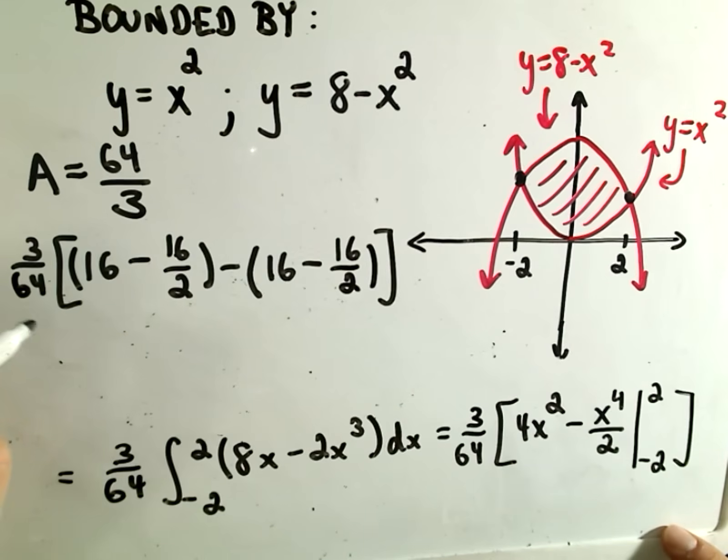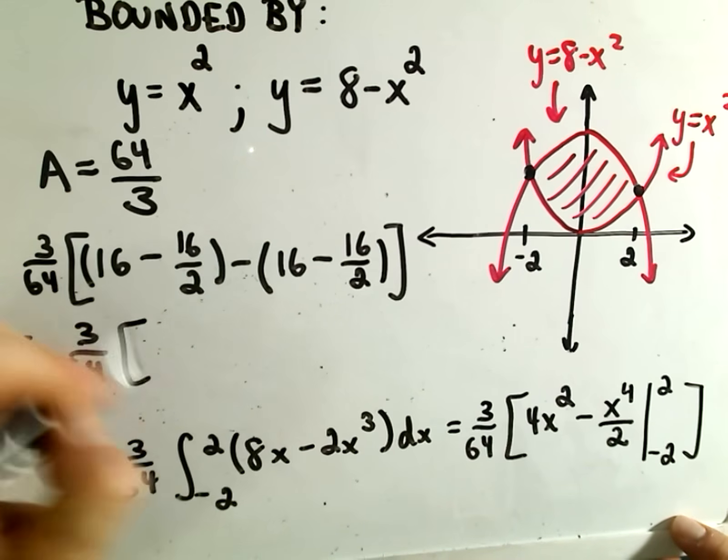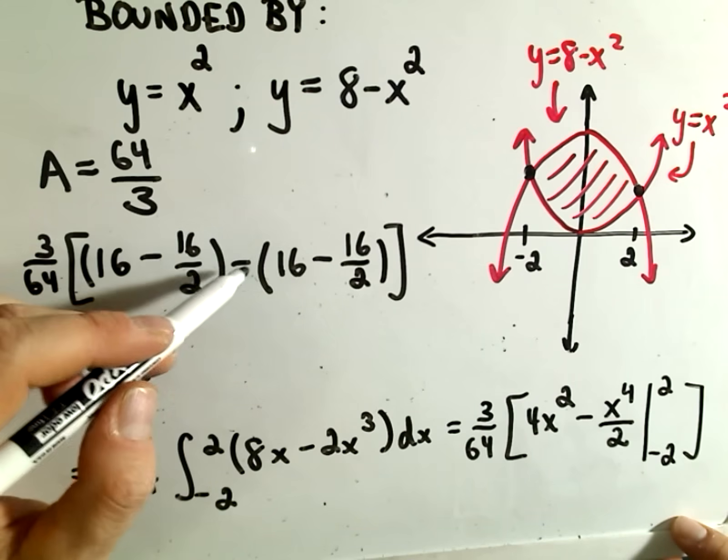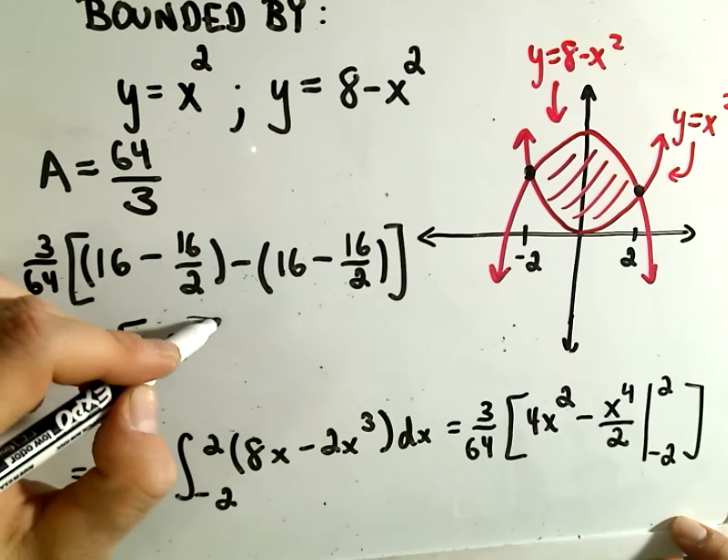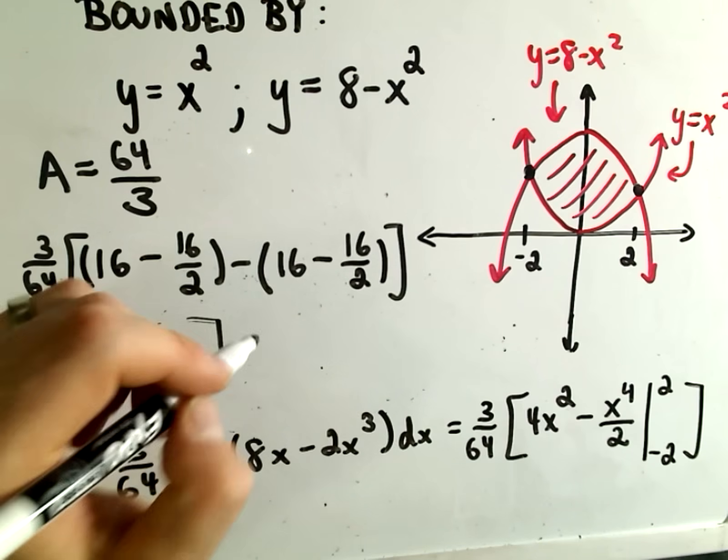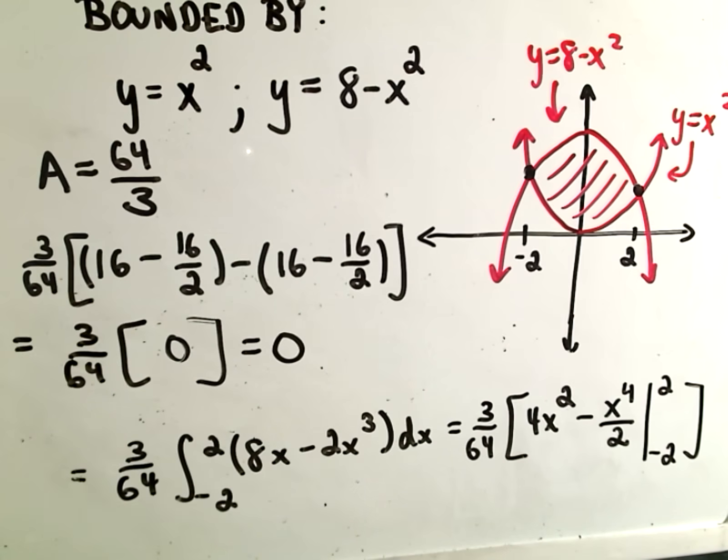If you simplify everything down here, we get 3/64. Notice the 16s will cancel out. We'll have -16/2 minus -16/2, which gives us positive 16/2. So on the inside, we just get 0. So 3/64 times 0 will simply give us 0, and that's our x-bar.